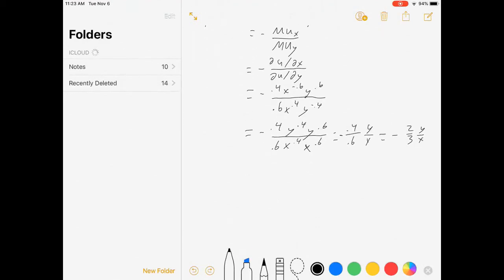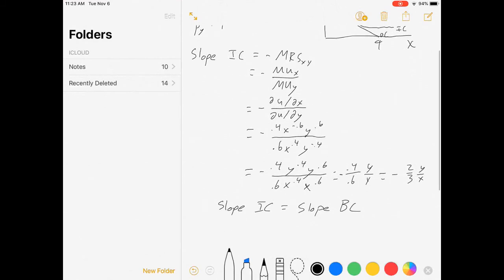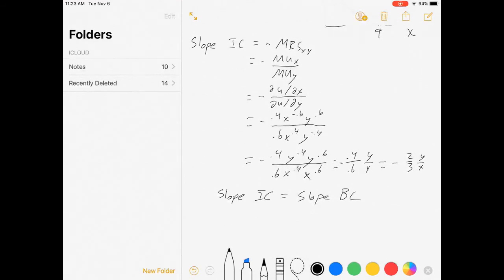And so I'm going to set the slope of the indifference curve equal to the slope of my budget constraint. And that is the first part of finding this special point. Those two lines have the same slope. Let's see. Slope of my indifference curve. Minus 2 thirds y over x. Slope of the budget constraint. Minus 4 over 9.